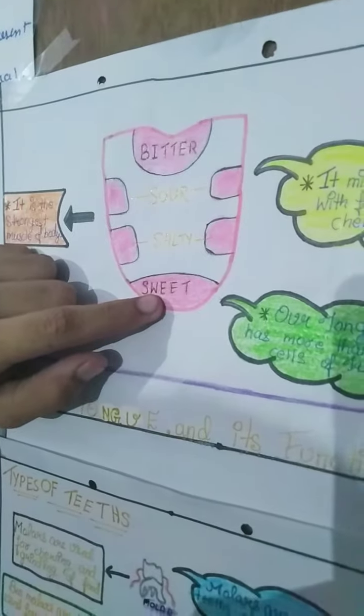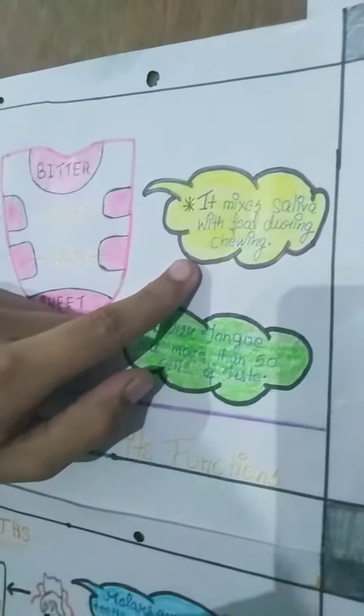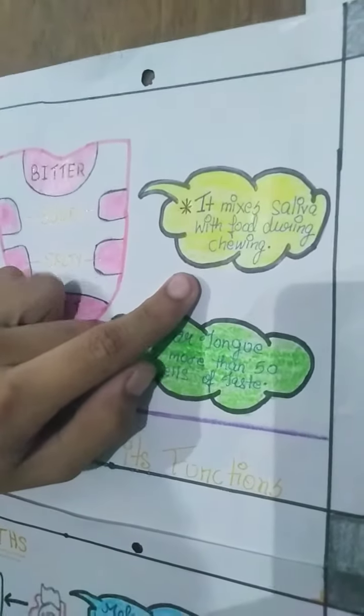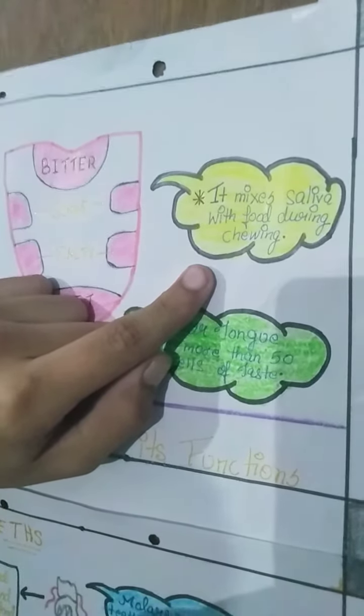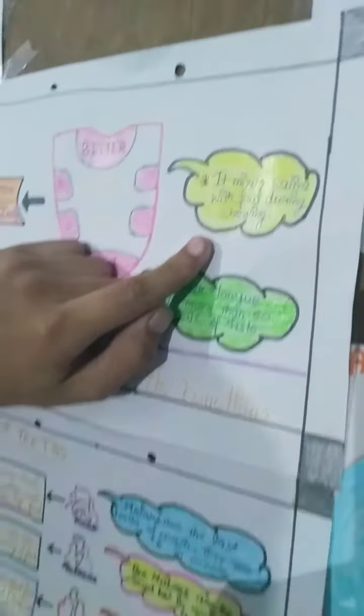So, this was how a tongue tastes food. Now, some points about the tongue. The white liquid in our mouth is called saliva. The tongue mixes saliva with the food during chewing, which is used to digest the food easily.